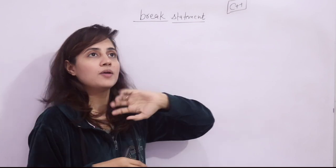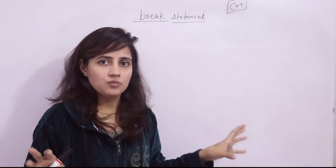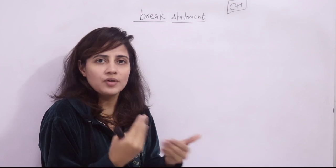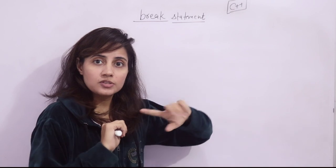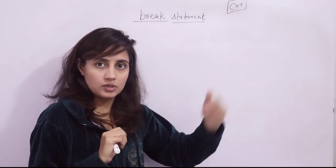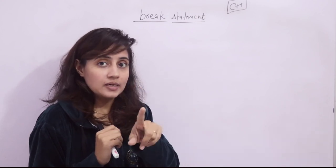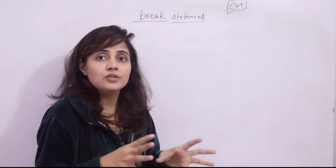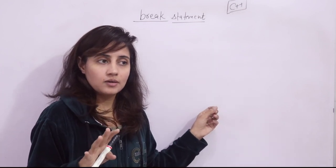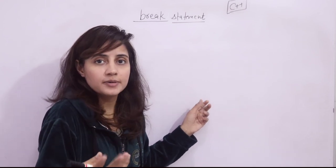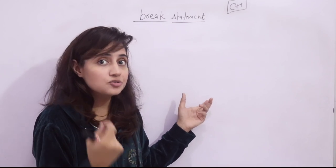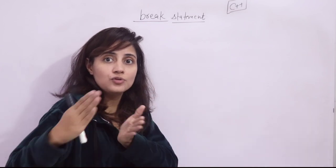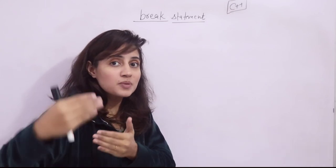In this video, we will see what is the break statement, why we use it, how to use it, and everything about the break statement with the help of a program practically. First, what is the break statement and why we need it? As we discussed switch case statements in previous videos, there we used break to jump out of the switch case. Same way, to jump out of a loop, we also use break. It is a control statement — you can also call it a jump statement. It is called a control statement because it is used to control, break, or manipulate the regular flow of your program or loops whenever a specific condition is met.